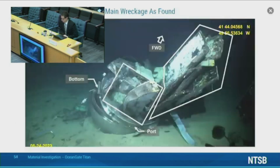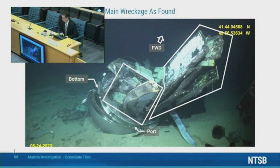Here's another view of the main wreckage. From this view two notable pieces of the wreckage are visible and indicated. One is the piece that extends nearly the entire length of the hull near the top, and the other is a piece on the port side as indicated by the white outlines.